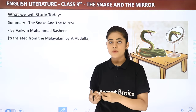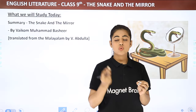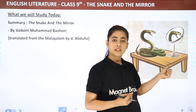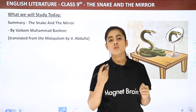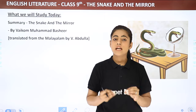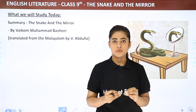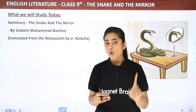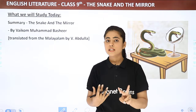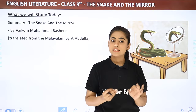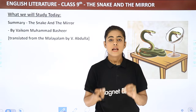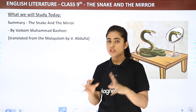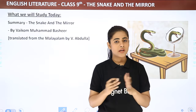The title is appropriate because the whole story revolves around the moment when the snake sees itself in the mirror and then leaves the homeopath doctor, keeping him safe. These two elements — the snake and the mirror — make the story complete. A title is appropriate either when it conveys the theme or message of the story, or when it talks about the main characters. Here, it is the second case that proves the title is appropriate.